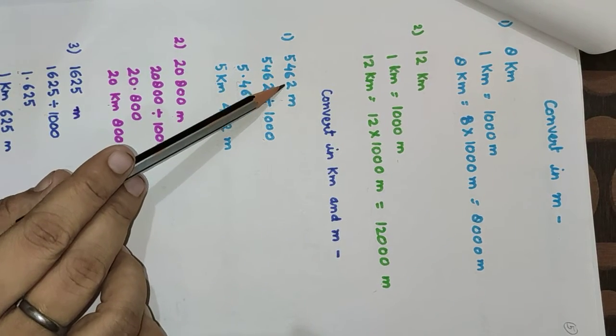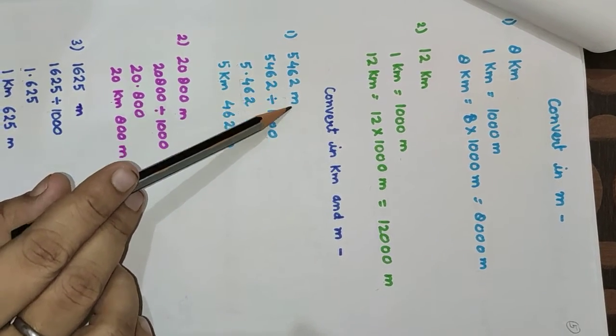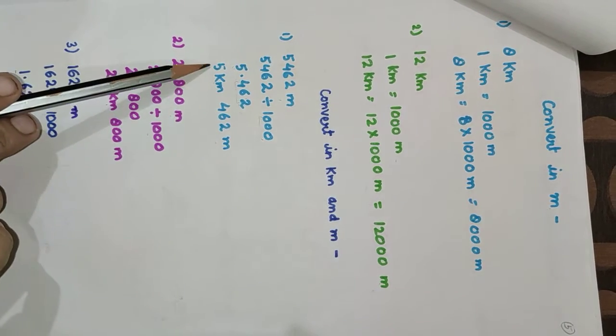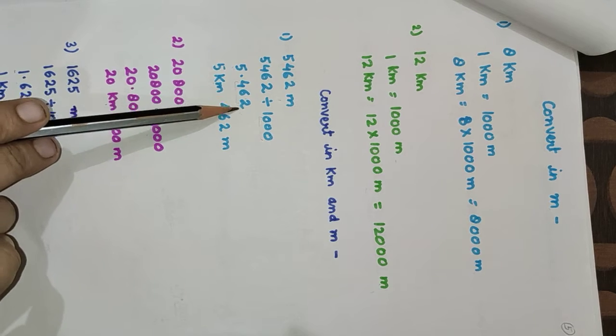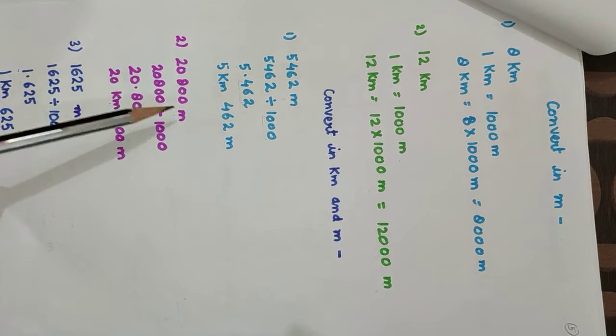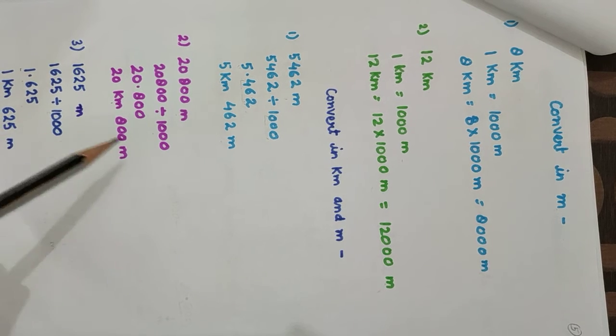Convert meters to kilometers. Here is 5462 meters. We are going to divide it by 1000. The answer is 5.462, which we write as 5 kilometers, 462 meters. We follow the same formula.